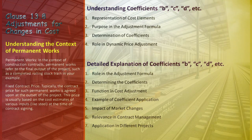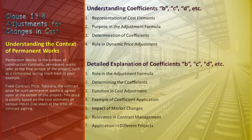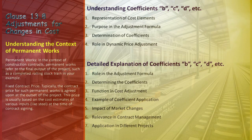Consider a building construction project with a clause for price adjustment due to market changes. Analysis reveals that labor costs account for 40% of the project, equipment for 30%, and materials for 30%. Consequently, the coefficients are set as B = 0.40, C = 0.30, and D = 0.30. Should there be significant shifts in the cost indices for labor, equipment, and materials, these coefficients will be utilized in the formula to compute the adjusted contract price, ensuring that the contract value remains aligned with current market reality.